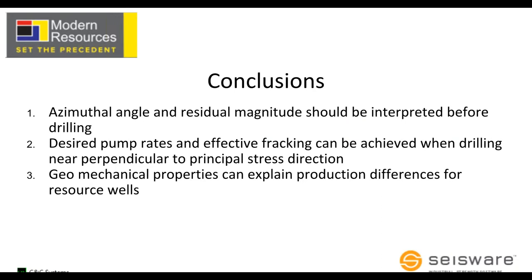So the conclusion here is that azimuthal angle and residual magnitude should be interpreted before we drill our wells. The regional trend is not sufficient, we can see much higher production if we take the local information and adjust the drilling angle. Desired pump rates and effective fracking can be achieved when drilling near perpendicular to the stress direction, and geomechanical properties can explain production differences for resource wells, and I think I've shown that the geology doesn't seem to be nearly as important as the geomechanical properties.